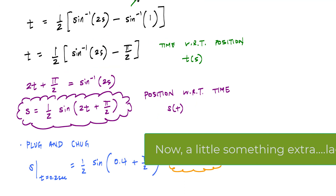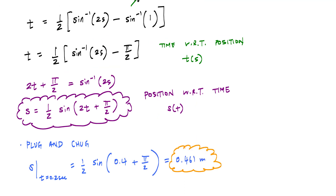Now that questions A and B are answered, the real power of dynamics is being able to see position, velocity, and acceleration with respect to time — identifying local maximums and minimums, the largest or smallest velocity, when the system changes direction, and whether acceleration is increasing or decreasing. A very useful tool is to always plot the functions we work with.